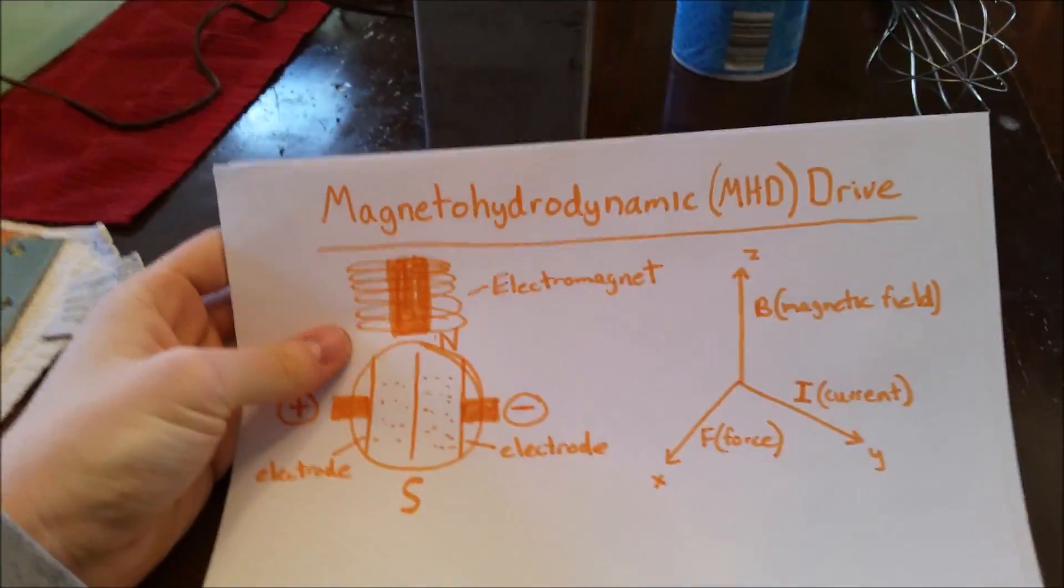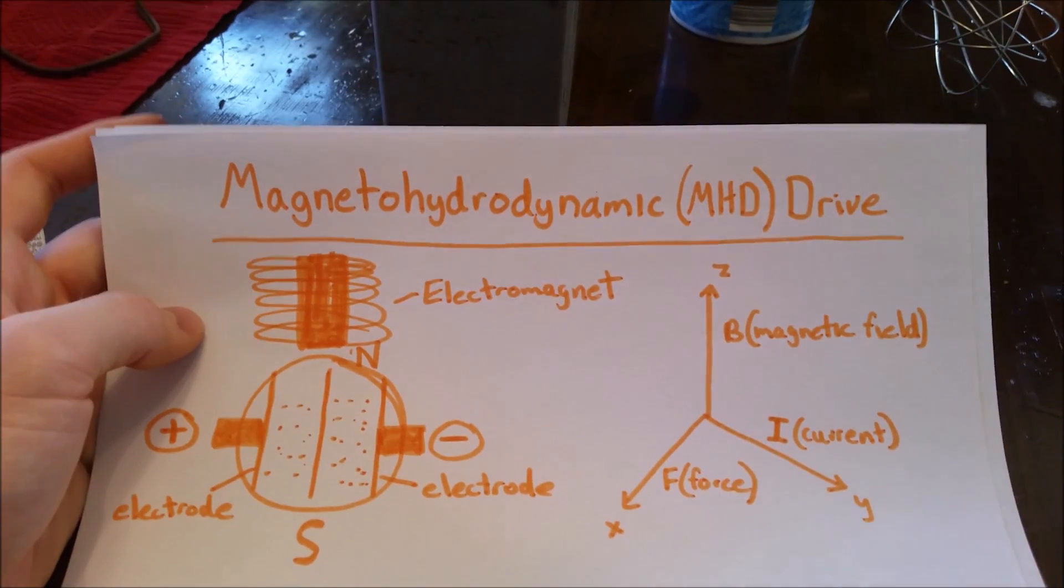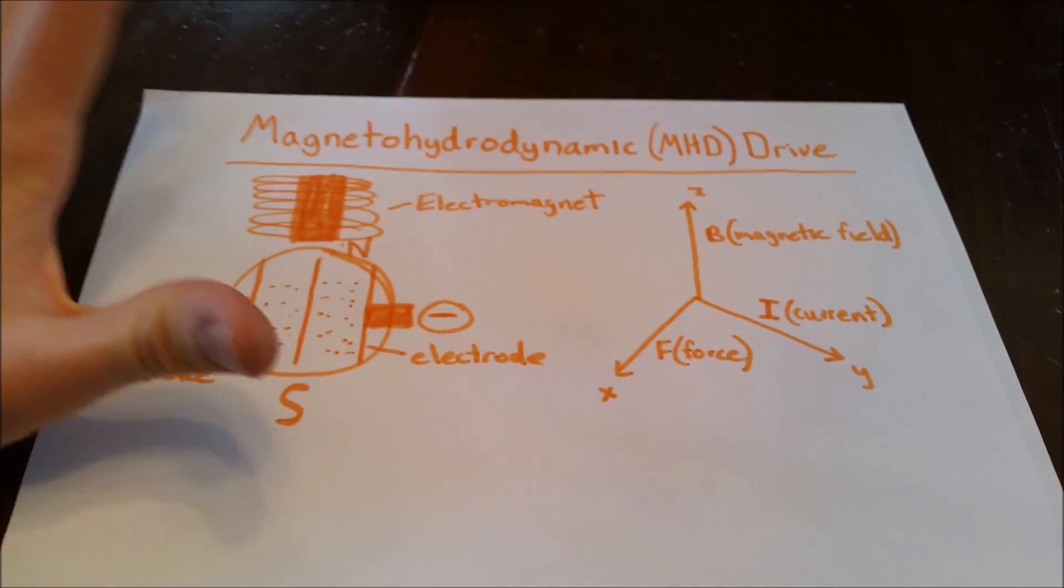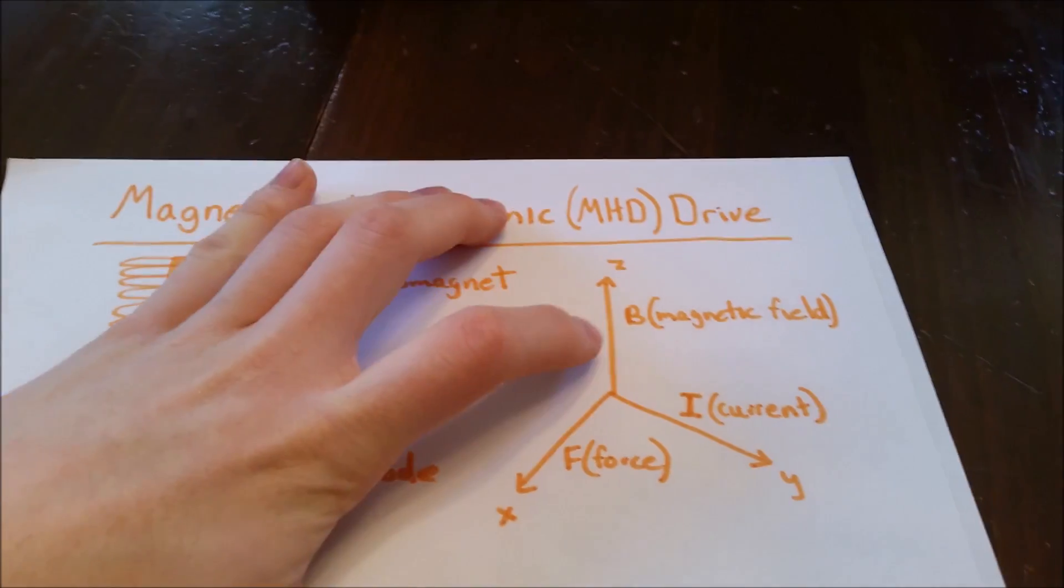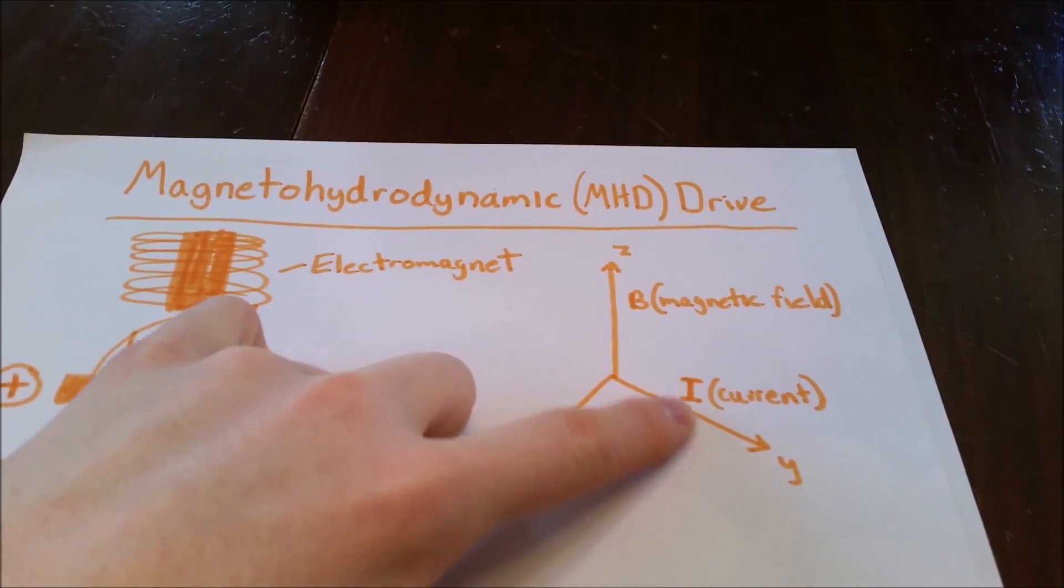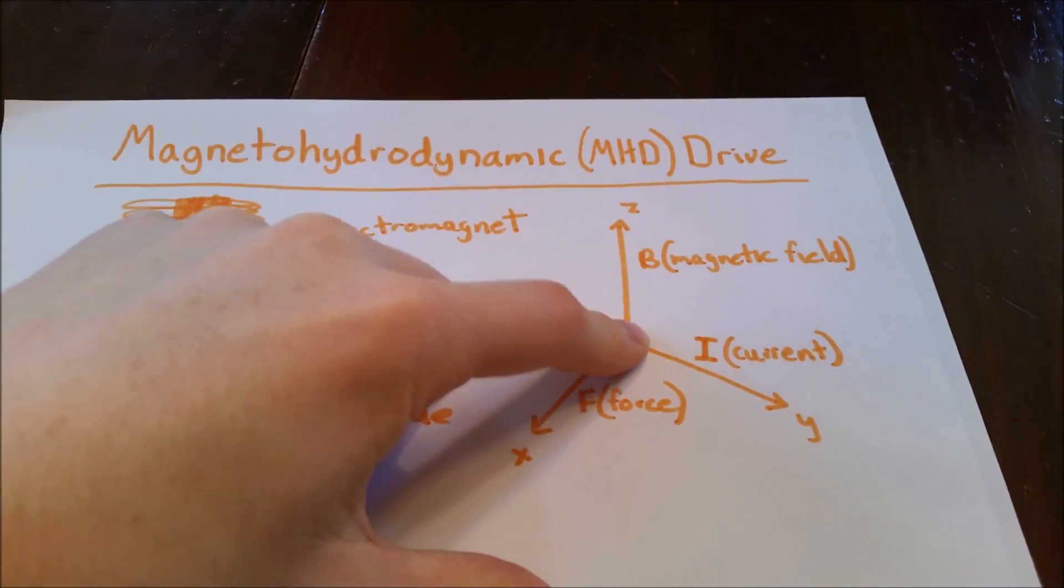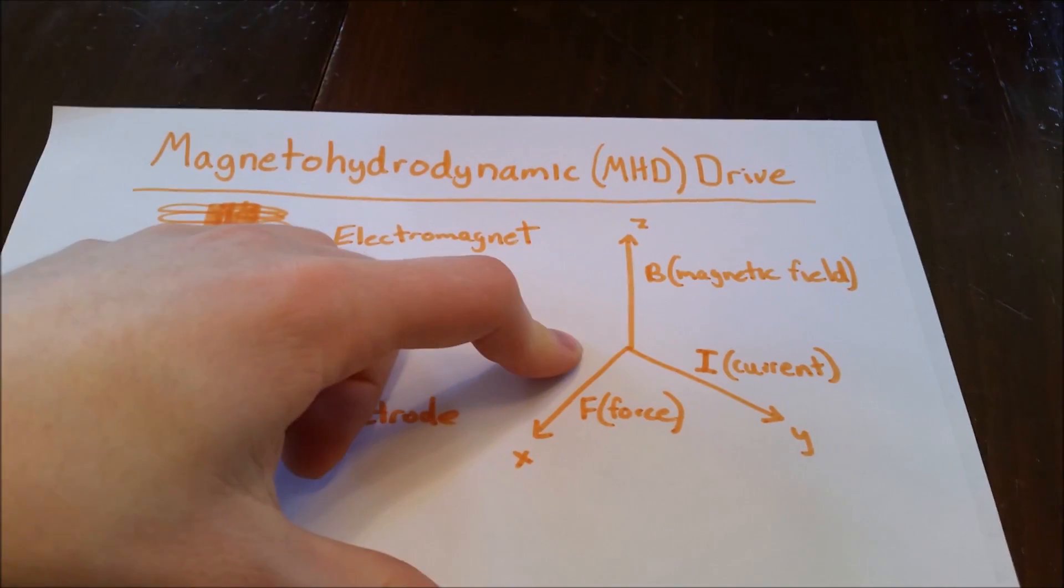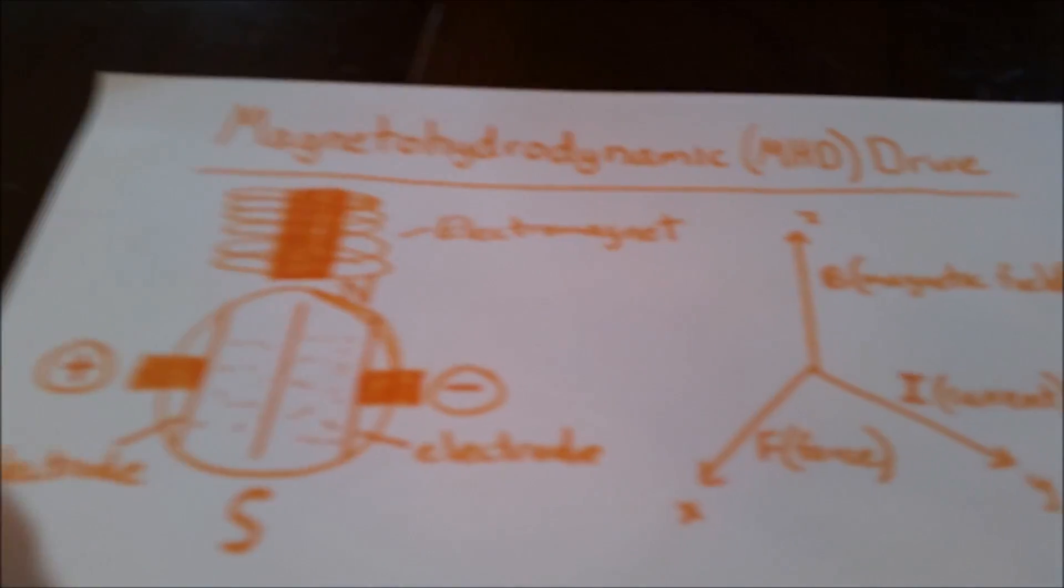I'm going to explain the science behind our project. It's called the magnetohydrodynamic drive or propulsion system, MHD for short. The way this works is based on magnetic field law principles. Basically, if you have current flowing in one direction and you apply a magnetic field in a perpendicular direction to the current, then that current experiences a force that's mutually perpendicular to both the current and the field.